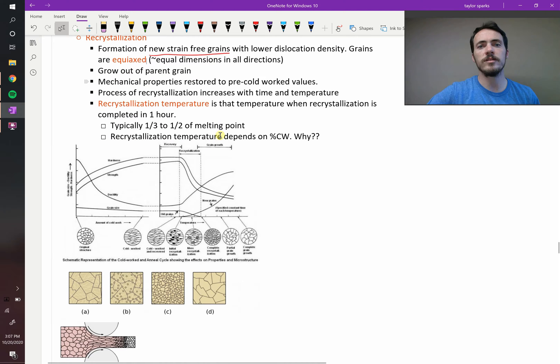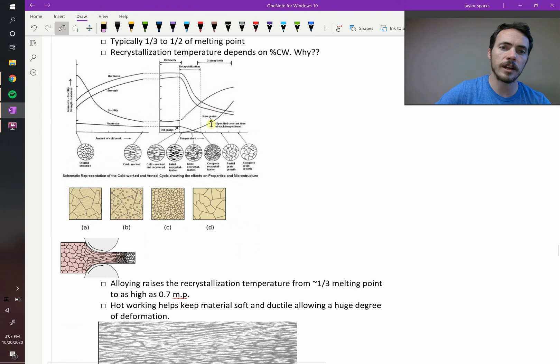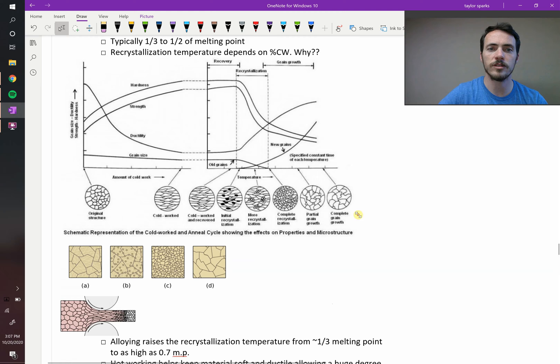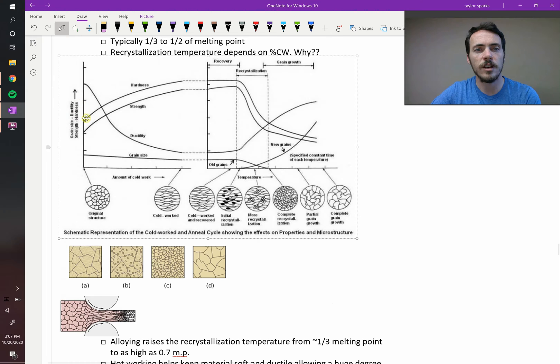Recrystallization is an interesting process. It happens at about typically between a third and one half of the melting point. There's something called the recrystallization temperature, and that's when you get complete recrystallization in one hour. So whatever temperature causes all of your old nasty grains to get replaced by nice new ones in one hour is the recrystallization temperature. And this is sort of a schematic of what's happening at the microstructure during this process. You can see here's the grain size, which correlates to ductility and strength, correlating to hardness.